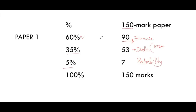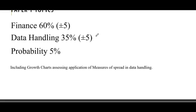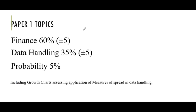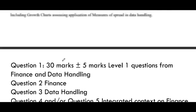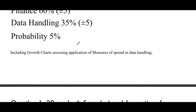Finance includes VAT, UIF, and pension. Finance will be 60% plus or minus 5, which simply means it might be 65% or 55%, but the largest mark has to come from finance. Data handling is 35% and probability is 5%. Here we might also include the growth chart and everything.